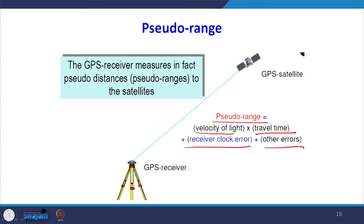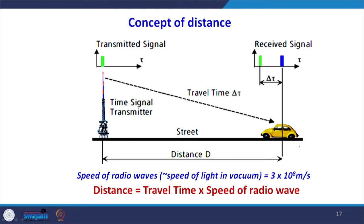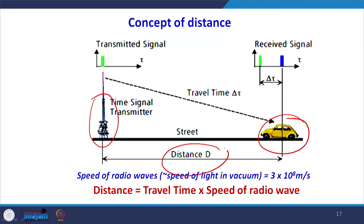We are not actually dependent on the signal from one single satellite. We take signals from several satellites so that we eliminate the receiver clock error and other errors. There is a car traveling on a road receiving a time signal from a transmitter. By the time the calculation is done, the car has already moved a certain distance in a certain time interval, creating a time lag delta t between the transmitted and received signal.